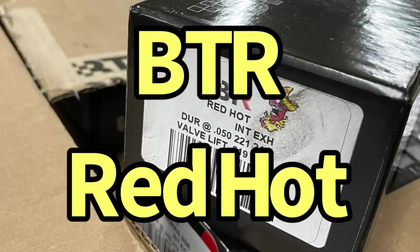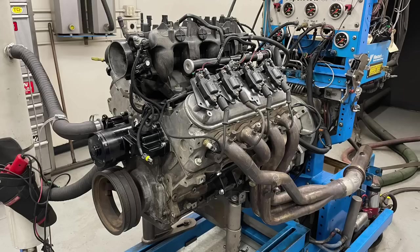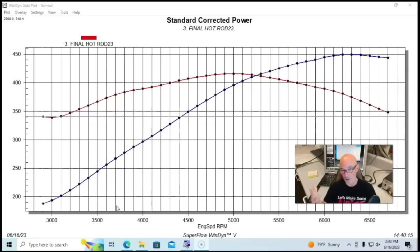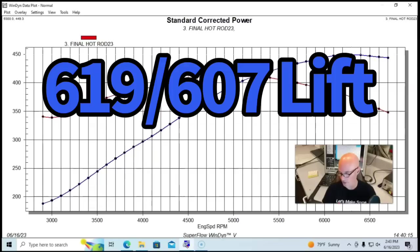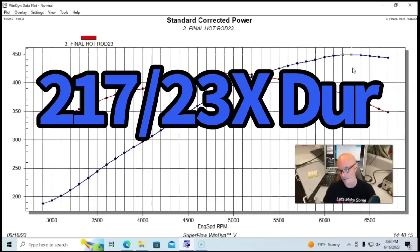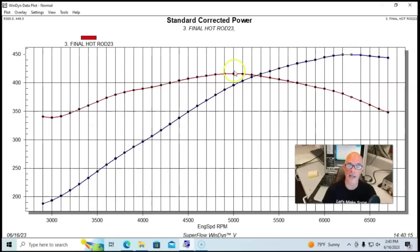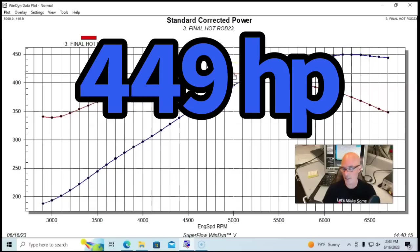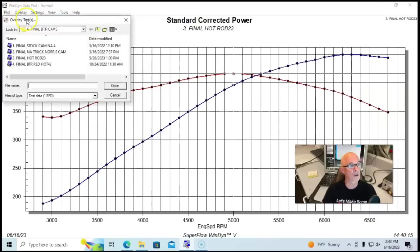Now we'll take a look at our final camshaft. And this was the Brian Tooley Racing Red Hot cam. Again, designed not for this Junkyard 5.3, but it goes to show if you were going to choose this kind of camshaft, this is something to look for. So this was our combination with our Brian Tooley Racing Hot Rod cam. That was the 619-607 lift, 217-230X duration and 114 degree lobe separation angle. That one made 449 horsepower, 416 foot pounds of torque. And here's what happened when we installed the larger Red Hot cam.